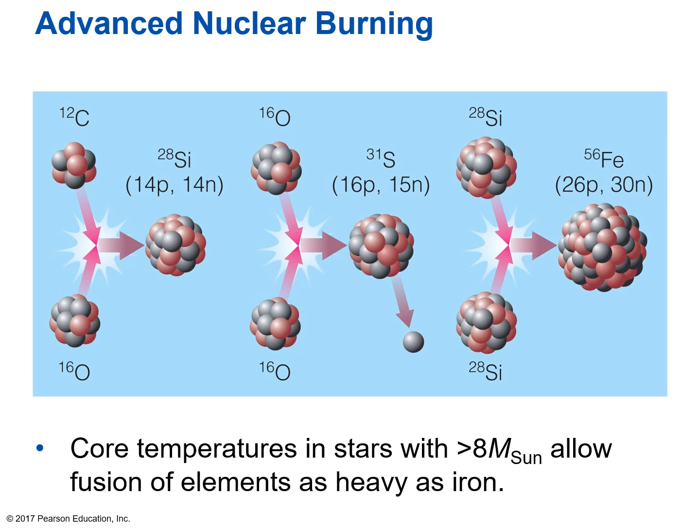Inside high-mass stars, fusion processes include: carbon and oxygen fusing together to make silicon; oxygen fusing with another oxygen to make sulfur; and silicon fusing with silicon to make iron. There are many other examples, but these illustrate how inside high-mass supergiants, all these heavier elements can be formed. Advanced reactions in stars make elements like silicon, sulfur, calcium, and iron.